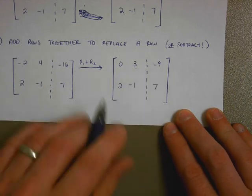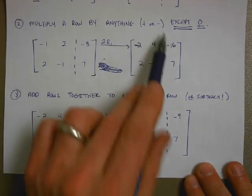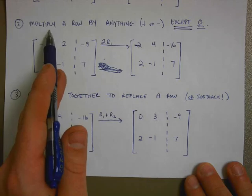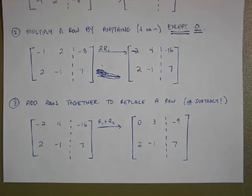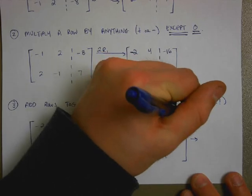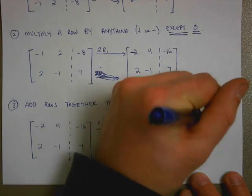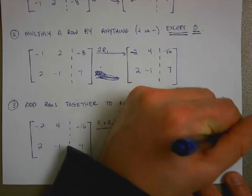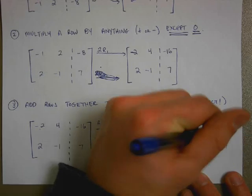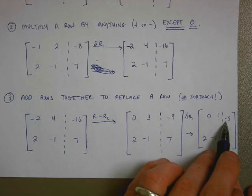Well, if I wanted to, remember, my rule number 2 is that I can multiply a row by anything, positive or negative. So I can also divide by anything because it's really like multiplying by a fraction. And so what I can do then is I can turn this into, if I wanted to say this is going to become 1 third of the original row, or I could divide by 3, I have 0, 1, negative 3 on top, 2, negative 1, 7 on the bottom.